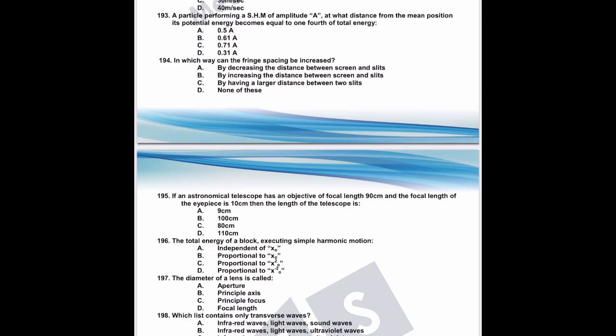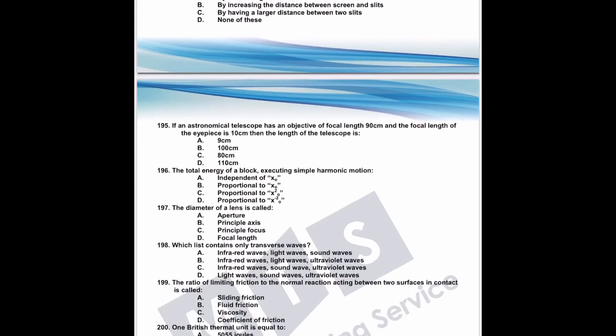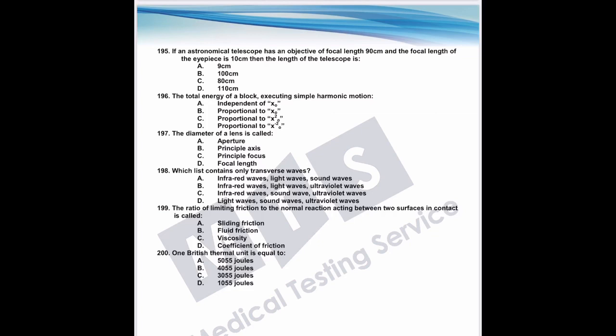Question 195: an astronomical telescope has an objective of focal length 90 cm and eyepiece focal length 10 cm. The length of the telescope is the sum of focal lengths: 90 + 10 = 100 cm.